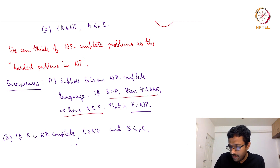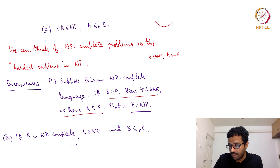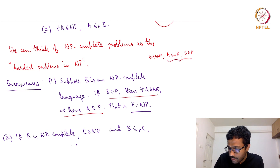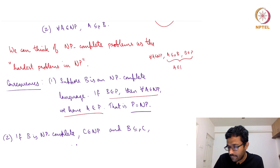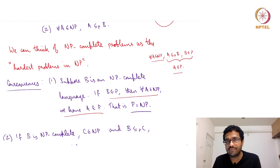Why is this the case? Because if B is in P, then for all A in NP, we know that A reduces to B because of the definition of NP-completeness. We started by saying B is NP-complete, and now by assumption B is in P. Together — as we saw in the last lecture — these two imply that A is in P. This means that for all A in NP, A is in P, which means NP is a subset of P, which is the same as saying P equals NP.